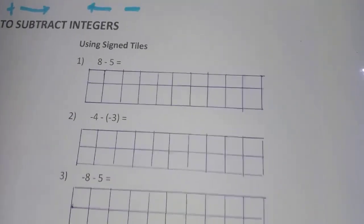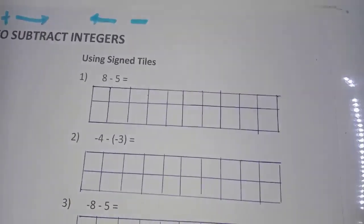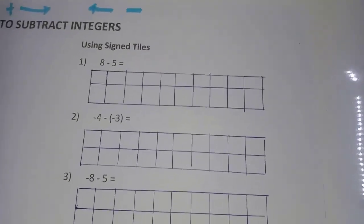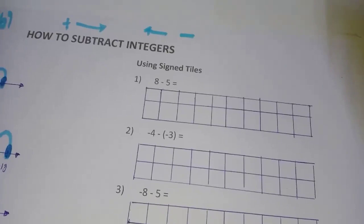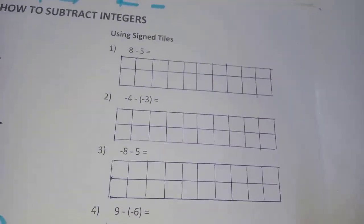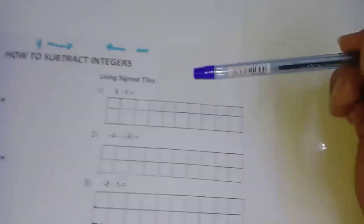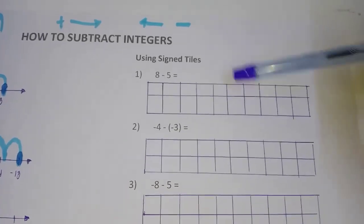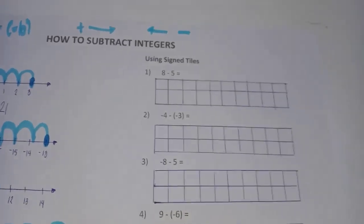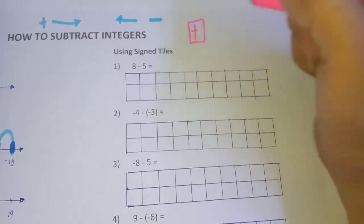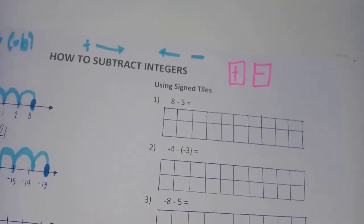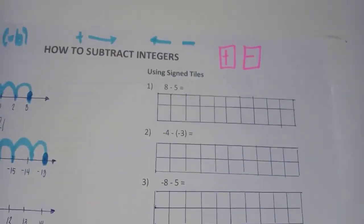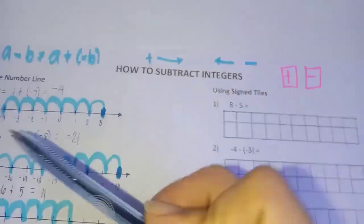Let's now proceed to the signed tiles method. Subtraction can be thought of as taking some number of things away from another. This idea is used in subtracting integers with signed tiles. We use positive signed tiles and negative signed tiles. A pair of one positive and one negative tile equals zero — they cancel out. We still convert subtraction into addition first.